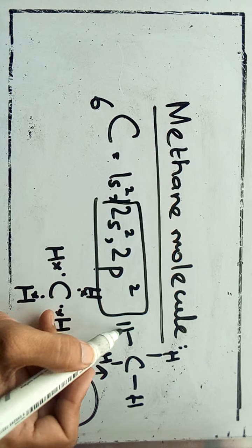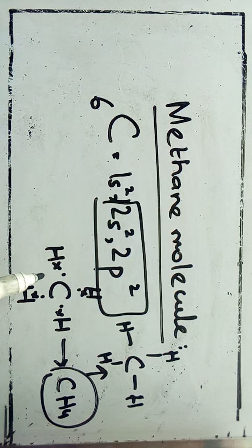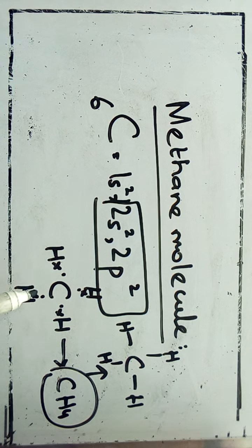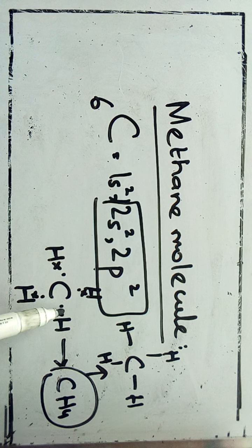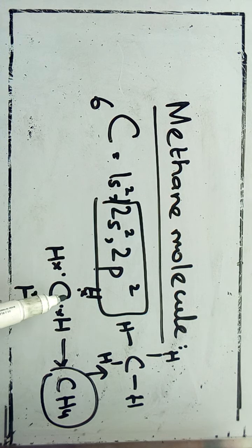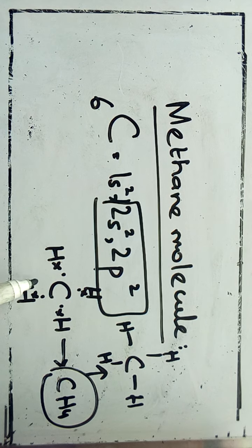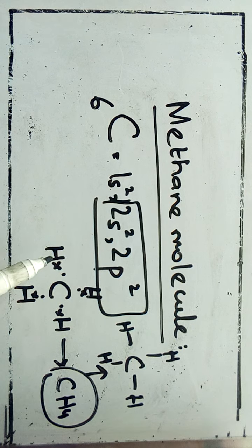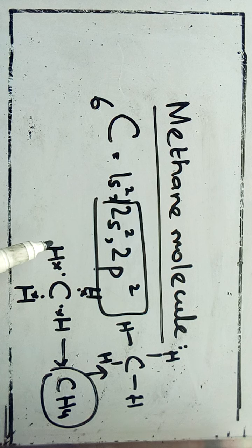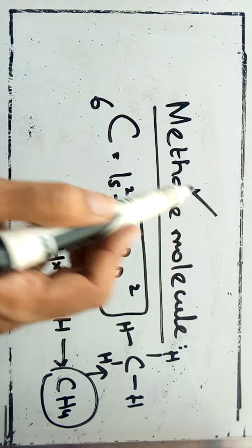Every atom making a bond with carbon is contributing a single electron; in the same way carbon is contributing a single electron to each of the hydrogen atoms. In this way a single covalent bond will be formed in the methane molecule.